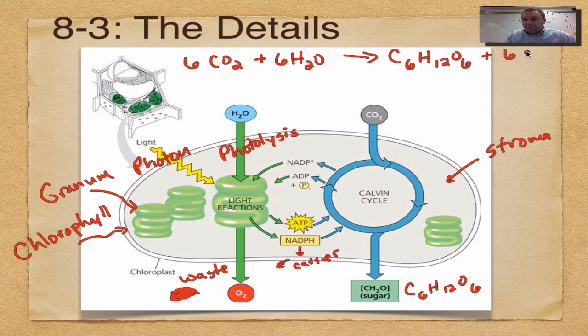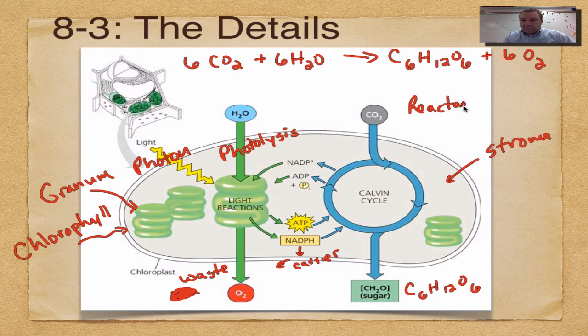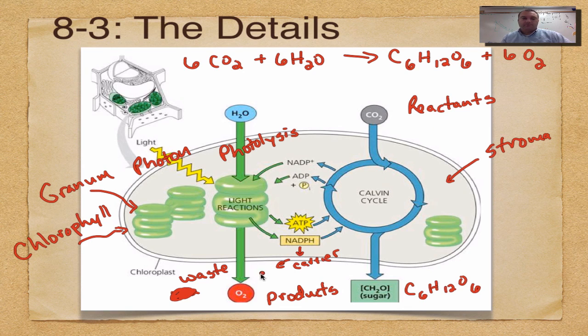As you can see, on the top we have the reactants, which is everything to the left of the arrow. At the bottom, we have the products, which is everything to the right of the arrow. You're bound to see this on a test or quiz, so make sure you study this picture and can label it just like I did.